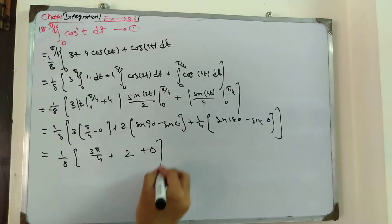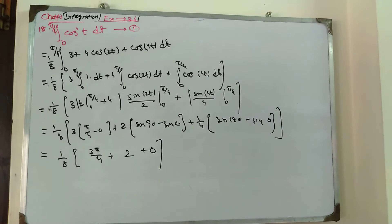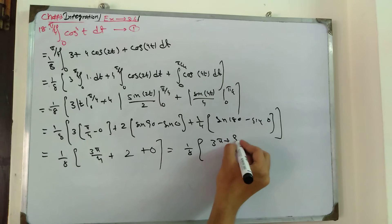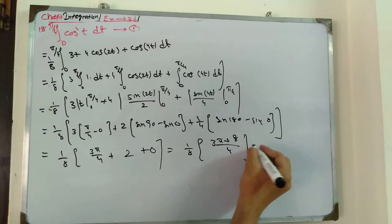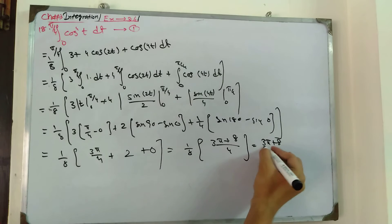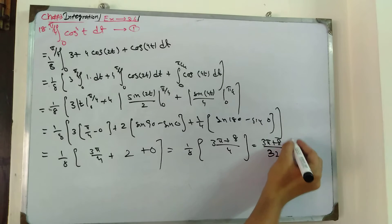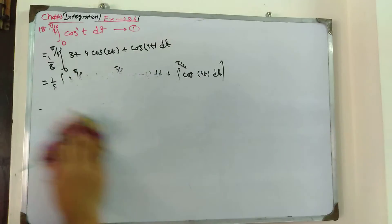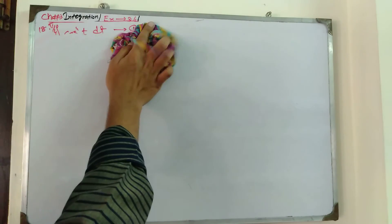Taking the LCM inside: (1/8) · (3π + 8)/4, which gives the answer (3π + 8)/32. This is your answer for question number 18: (3π + 8)/32. Now we go to question number 19.